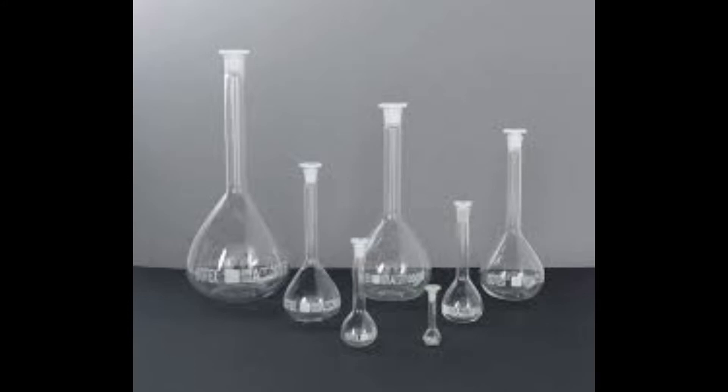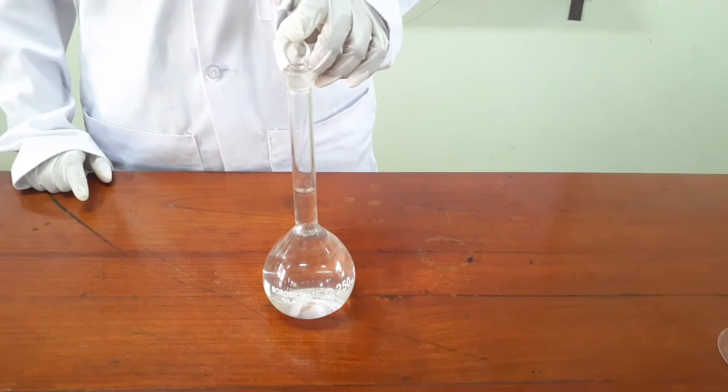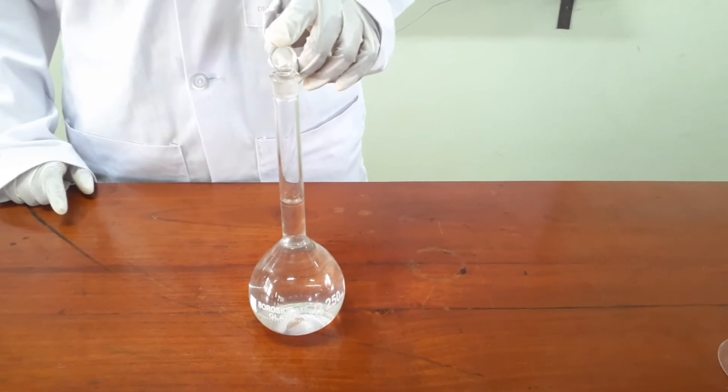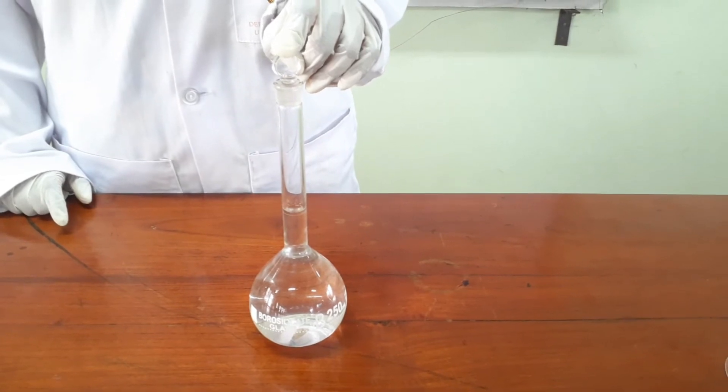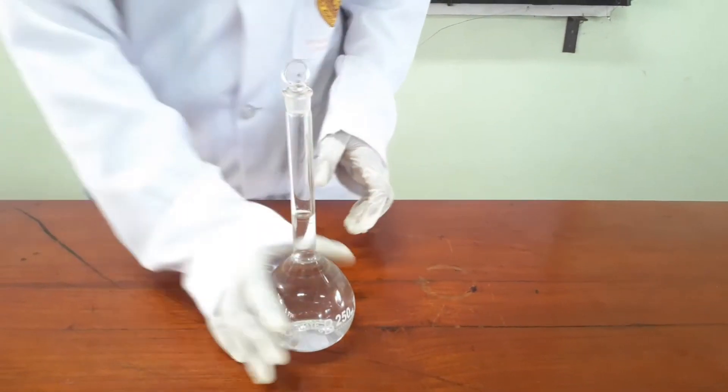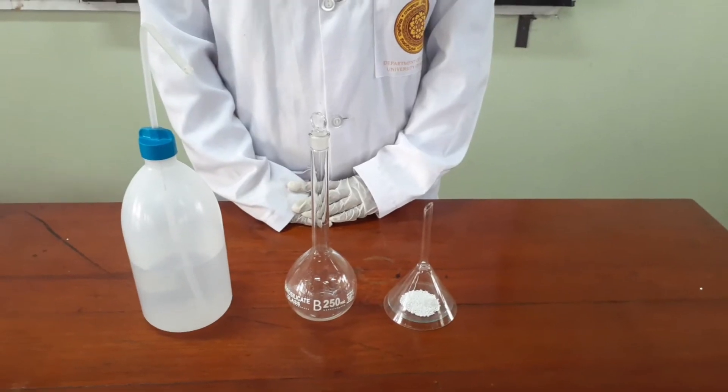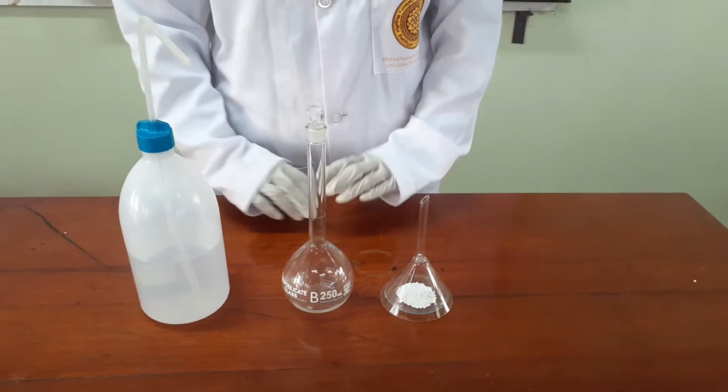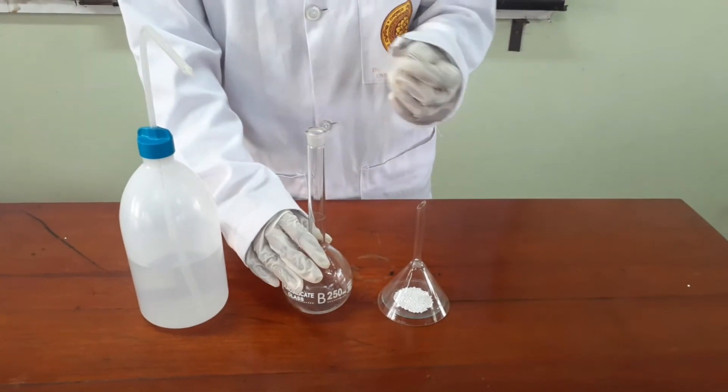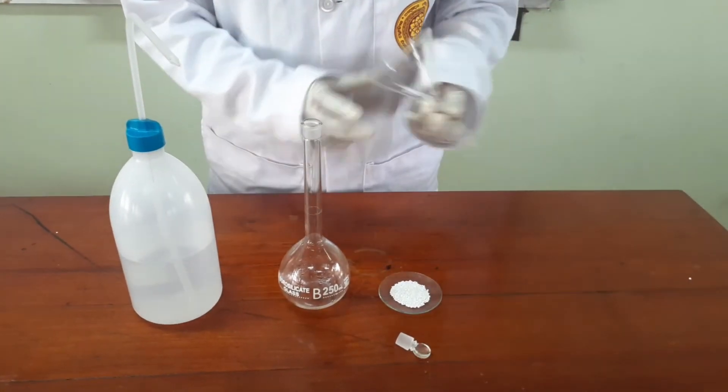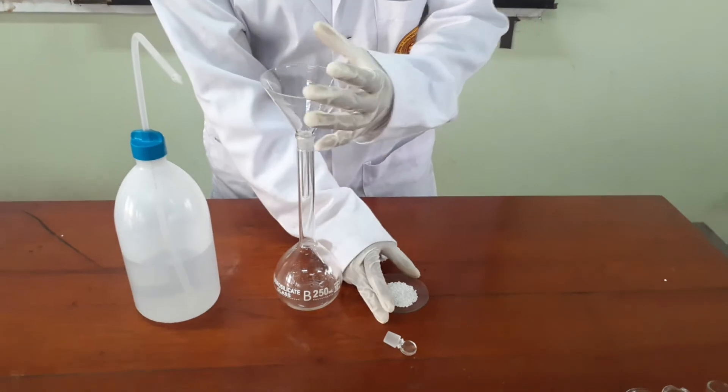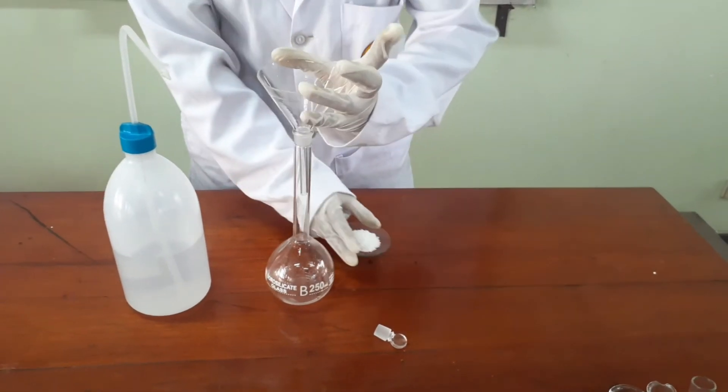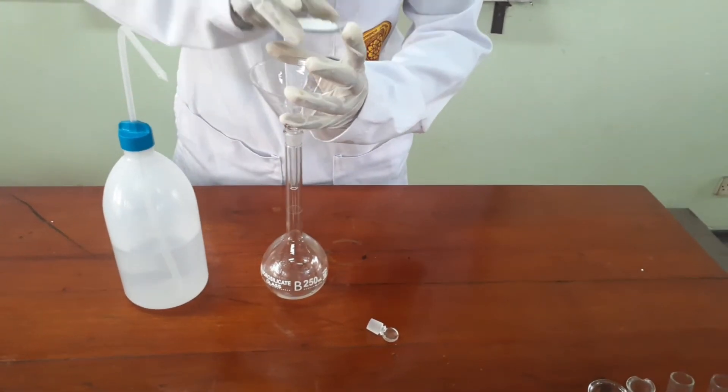We use volumetric flask to measure volumes very precisely, and we mainly use them to prepare a known solution with accurate concentration. Let's see how to prepare a solution sample. First, uncap the volumetric flask and then keep the funnel on the volumetric flask and add the solid sample into the volumetric flask.